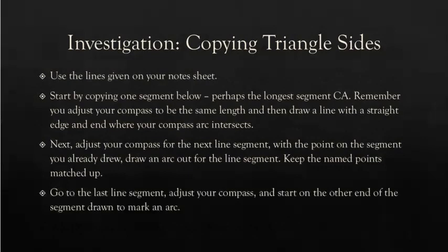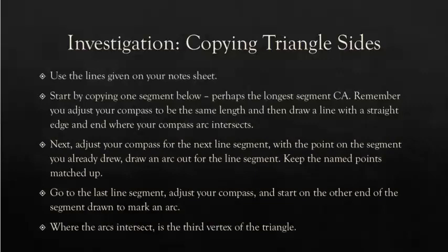Then go to the last line segment, adjust your compass again, and start on the other end of the segment drawn. So if you're drawing AB, you want to start on the A of the CA segment that you've drawn and mark out where B should be. Now you're marking an arc out where both of the B's should line up. So where that arc intersects, that's your third vertex of the triangle. Once you have the third vertex, you can draw the two other sides.